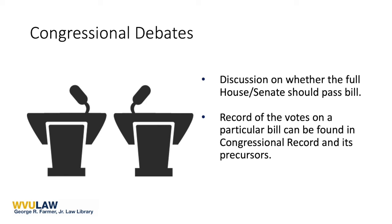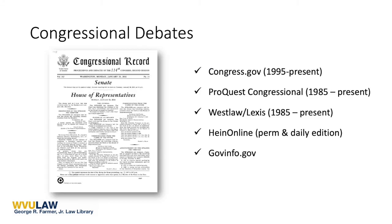The Congressional Record is published in two editions: the Daily Edition and the Permanent Edition. The Daily Edition is published following each day Congress is in session in two sections, one for the House and one for the Senate, and these are individually paginated. At the end of the year, a Permanent Edition — sometimes referred to as the Bound Edition — is published. In this comprehensive version, the contents are continuously paginated from the first day of the congressional session to the last, numbering in the thousands of pages. Distinguishing between these two versions is important for citation purposes. Added materials are marked by bullets or typeface to distinguish them from verbatim transcripts. The Congressional Record is available on congress.gov, ProQuest Congressional, Westlaw, Lexis, HeinOnline, and GovInfo.